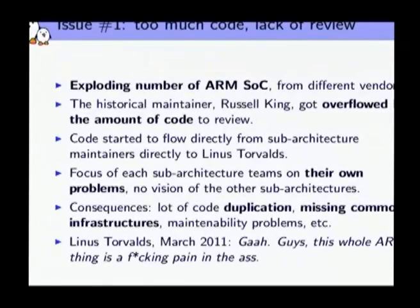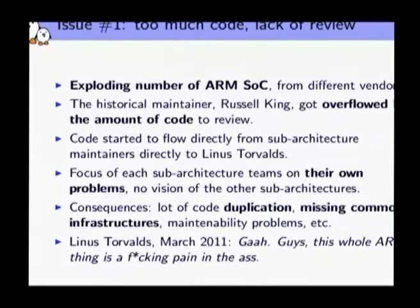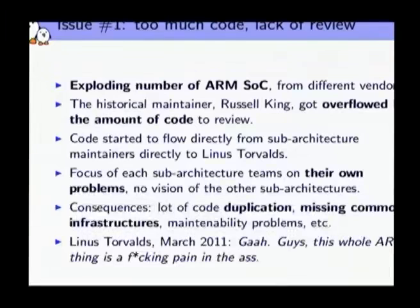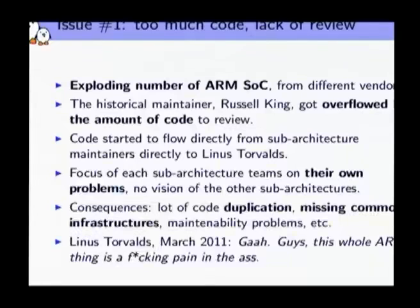Essentially, in recent years the number of ARM SoCs has literally exploded — basically everybody has ARM SoCs around that can run Linux. Those SoCs have become more and more complex, so it's not only the number but also the complexity of those SoCs that has increased quite a lot. The historical maintainer of the ARM architecture, Russell King, got more or less overflowed by the amount of code specific to each and every SoC that needs to be reviewed before being brought into mainline. It's really difficult because it's specific to each SoC — you have to know the specific details of this SoC from this vendor, from this other vendor, and so on.